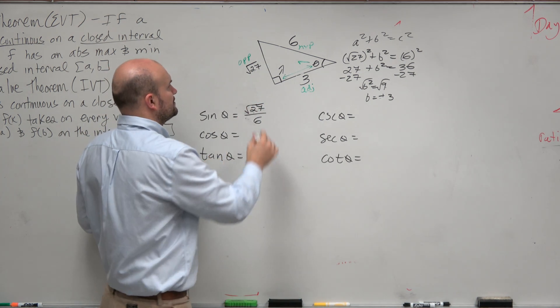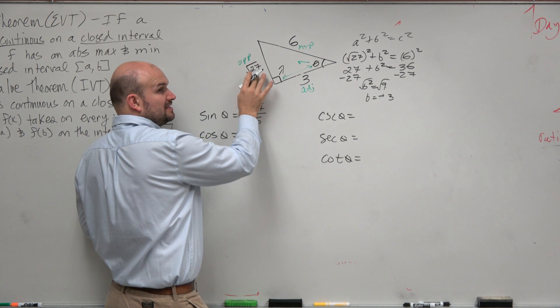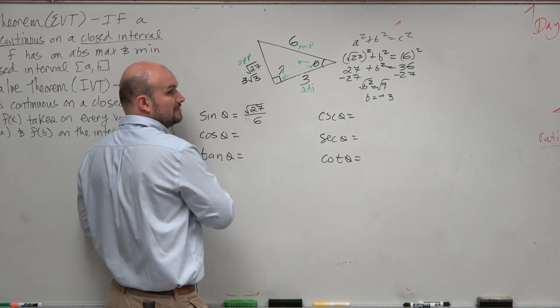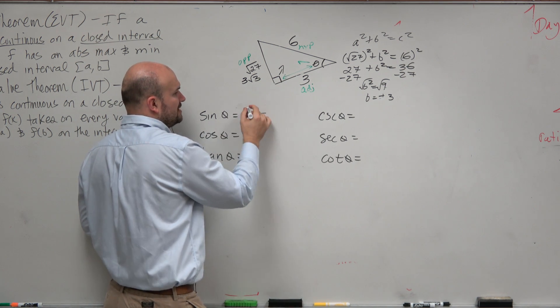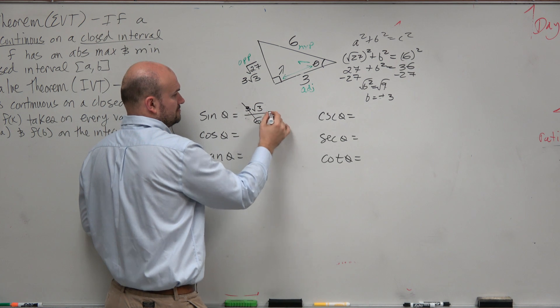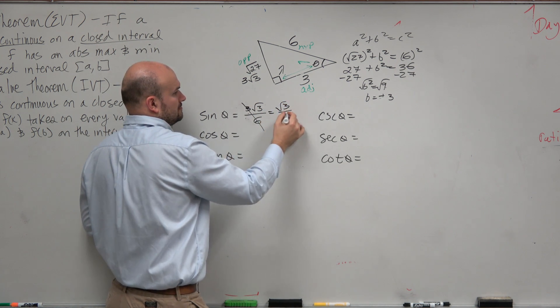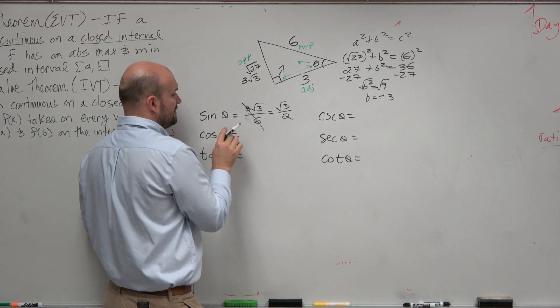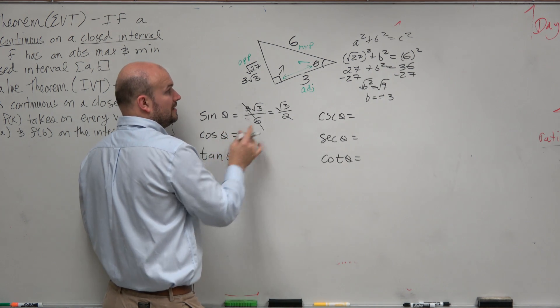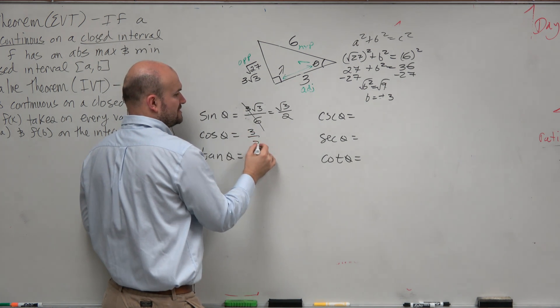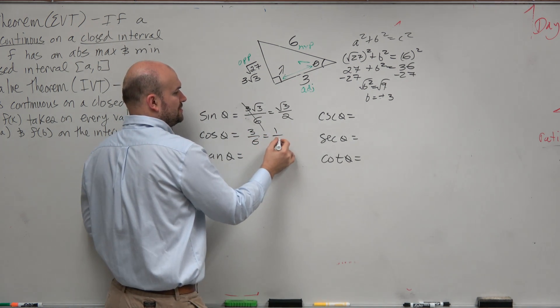Now, I forgot to simplify this. We could actually simplify this down. This actually can be simplified into 3 square root of 3. And I wanted to do that because we could simplify this. Over here, the cosine of theta is going to be adjacent over hypotenuse, which is going to be 3 over 6, which reduces down to 1 half.